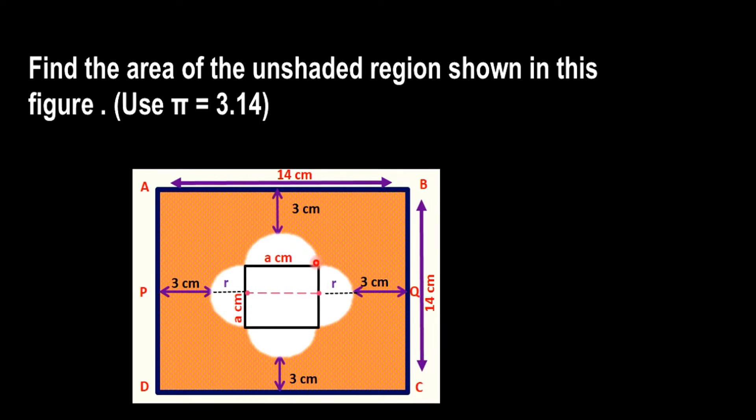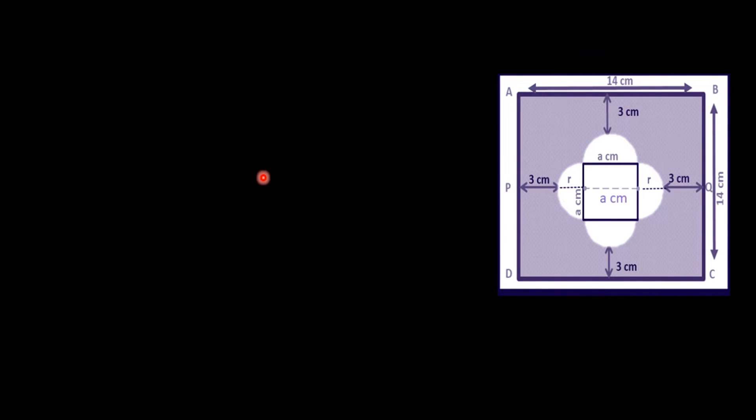This forms a rectangle here, so the measurement of this side is also equal to 'a' centimetres. The square's side equals 'a' centimetres, and since it forms a rectangle, opposite sides are equal, so this quantity is also equal to 'a' centimetres.